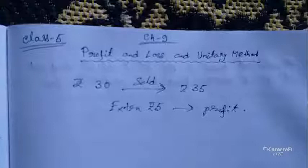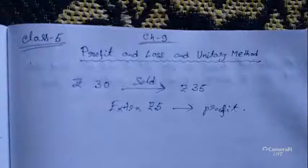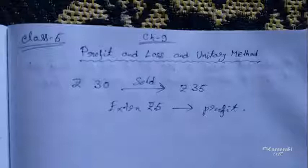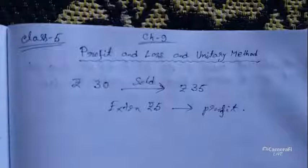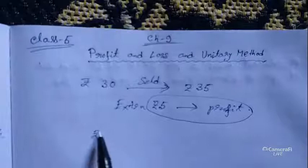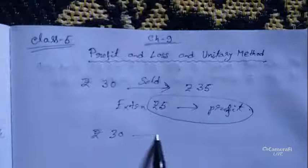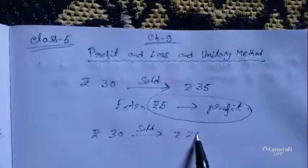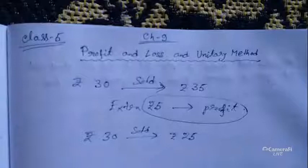Whenever you buy a thing at a low price and sell it at a high price, you are making a profit, and the extra money you are getting is the profit value. Here the profit value is rupees 5. Again, the same thing: if you buy the pen for rupees 30 and after some time you sold it to your friend for rupees 25,